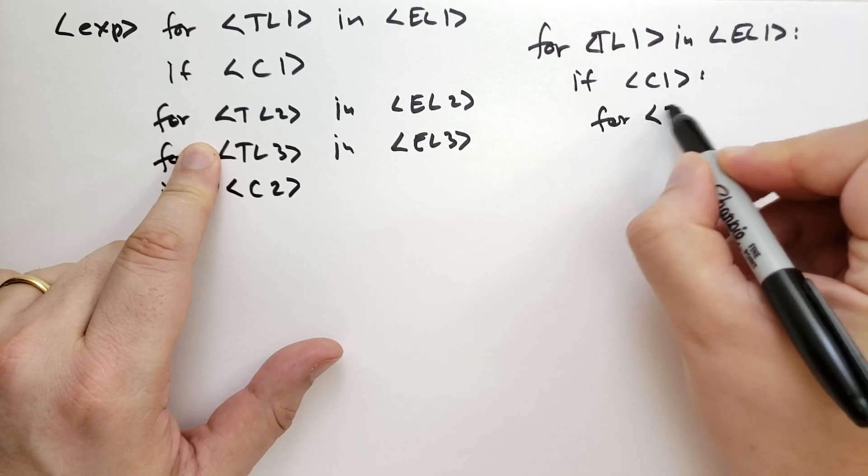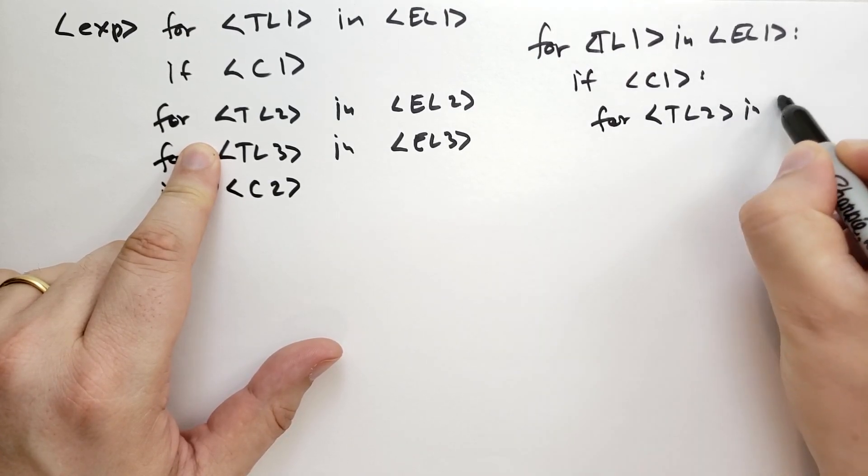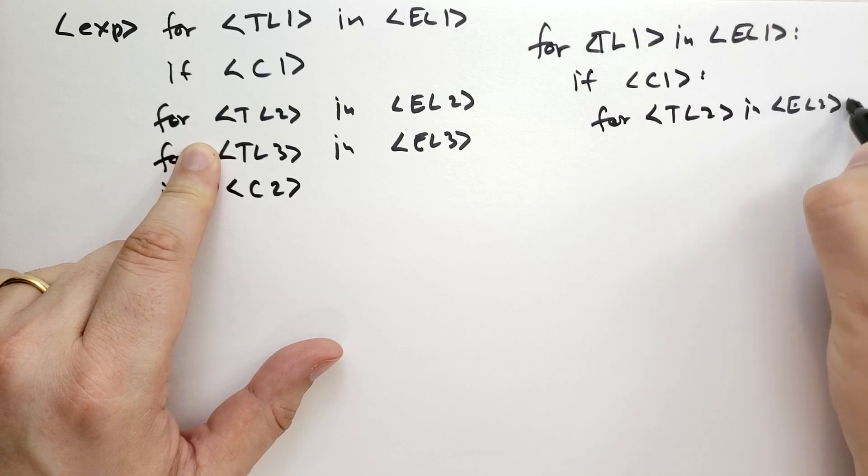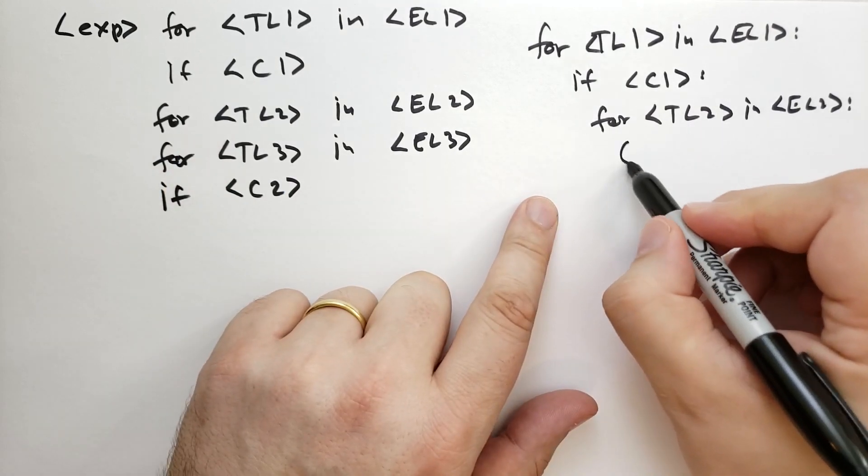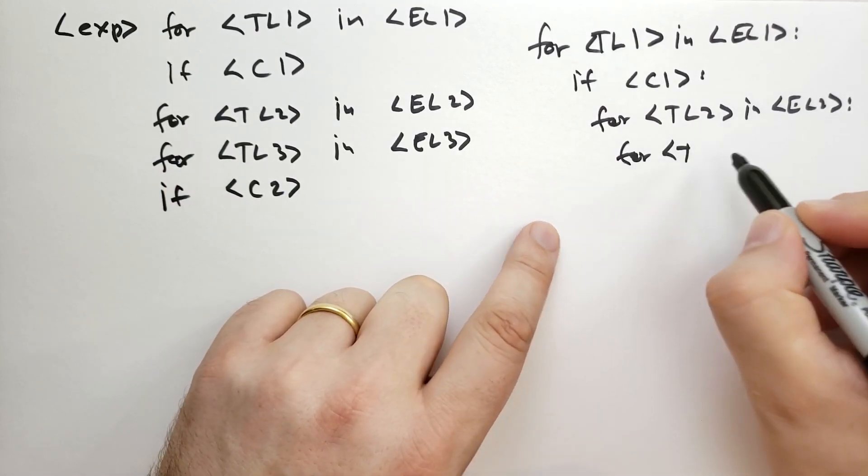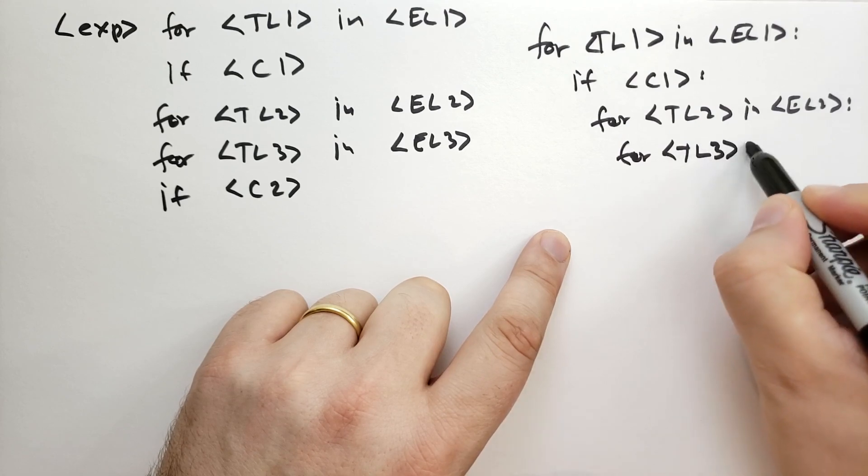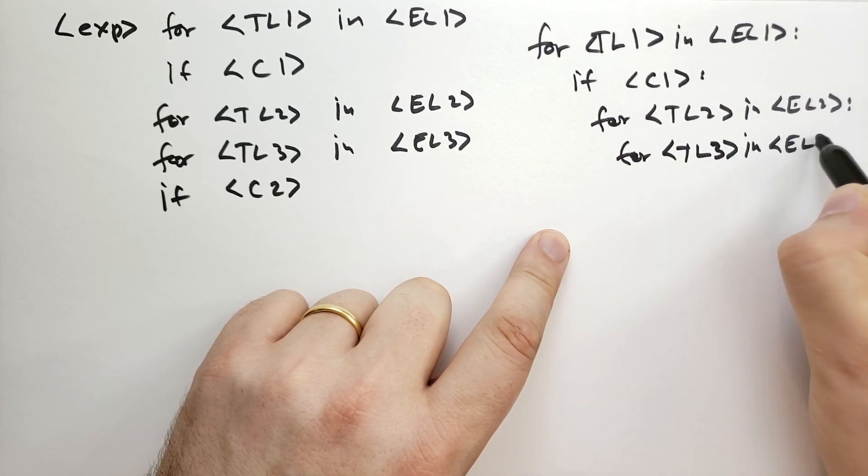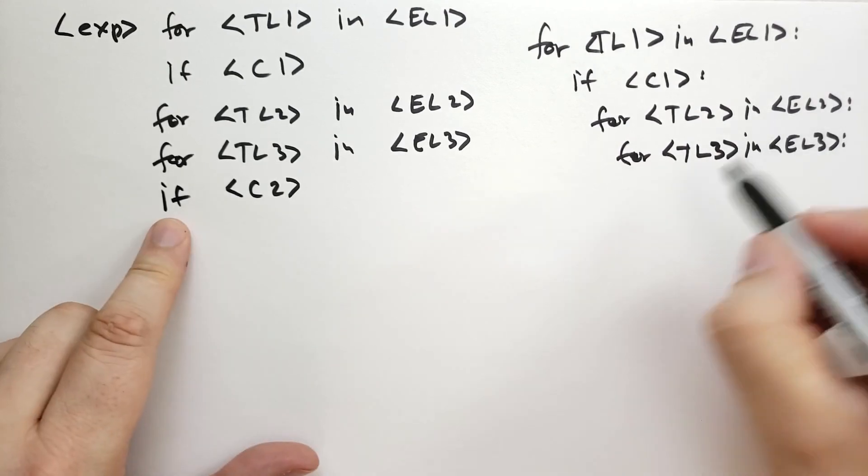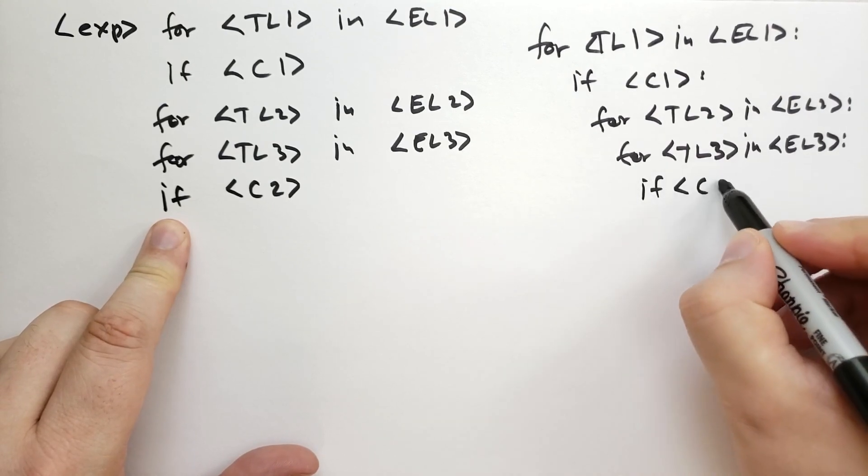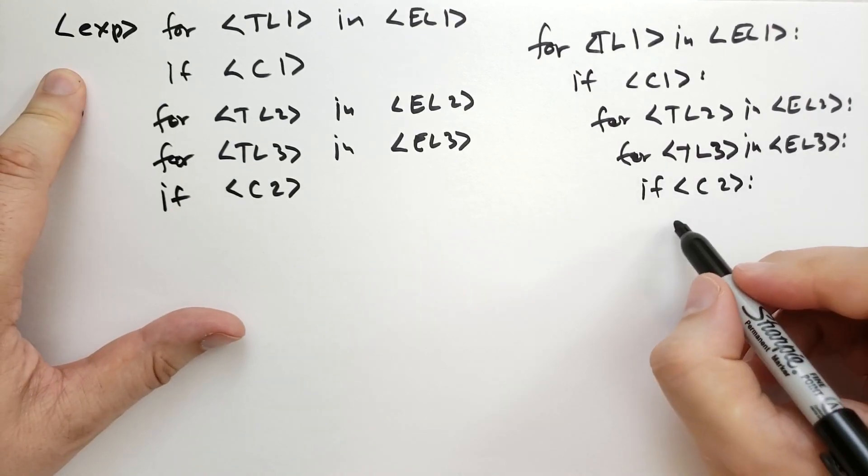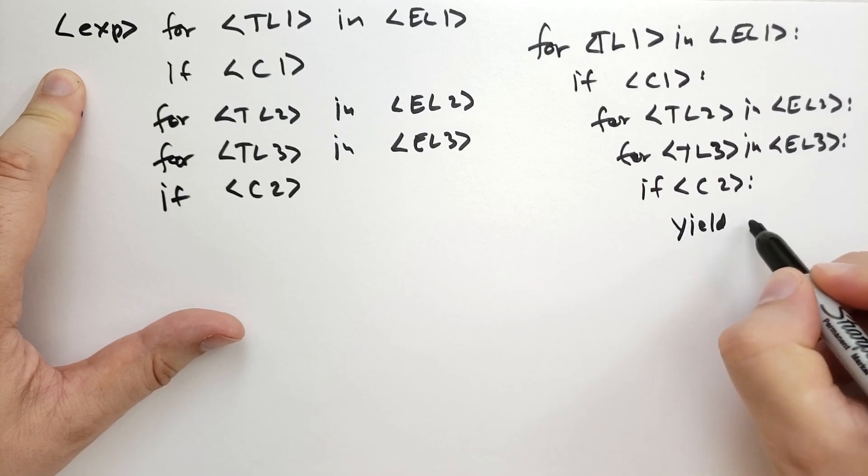for target list 2 in expression list 2. And then we have another for target list 3 in expression list 3. And then finally we have an if condition 2. And then finally we're going to yield that expression.